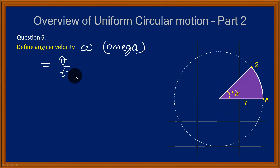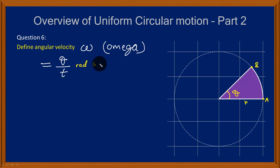What is the unit of angular velocity? We can derive it. Theta is measured in radians while time is in seconds. So the unit for angular velocity is radians per second.